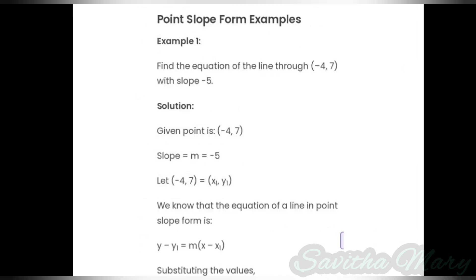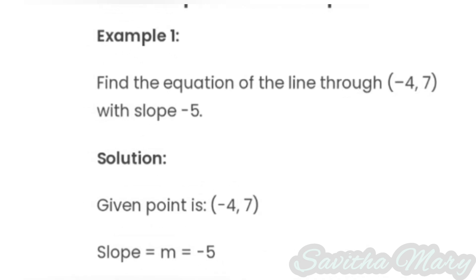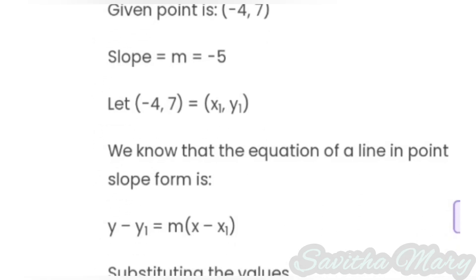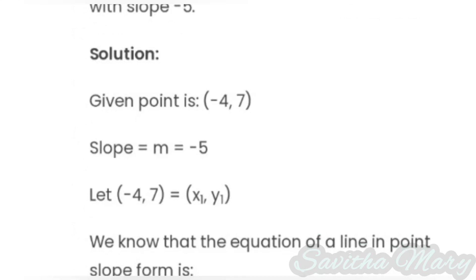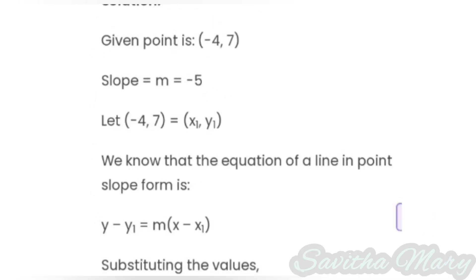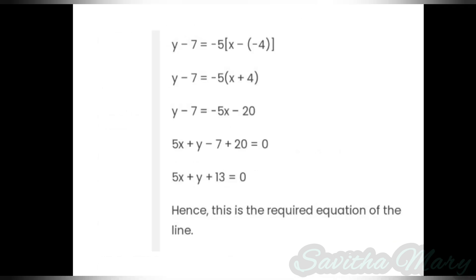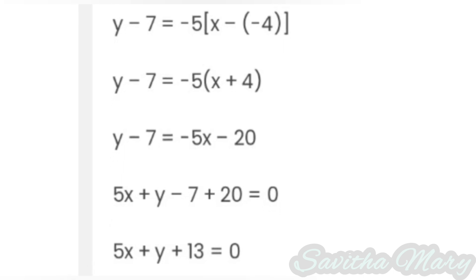Next, the second problem is point-slope form. The problem is: find the equation of the line through (minus 4, 7) with slope minus 5. We use the point-slope equation y minus y1 equal to m into (x minus x1). The given point (minus 4, 7) is named as (x1, y1), so x1 is minus 4, y1 is 7, and the slope m is minus 5. Substituting, we get y minus 7 equal to minus 5 into (x minus of minus 4). After solving, we get the equation 5x plus y plus 13 equal to 0.